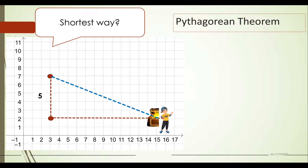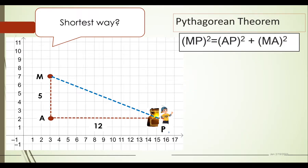Let's look at the measures. One leg of the right triangle is five units — the downward count. The other leg is 12 — the horizontal motion. To identify the segments more easily, let's name the distinct points: point M, point A, and point P. Following the theorem, MP squared — the hypotenuse — is equal to the square of leg AP plus the square of leg MA.